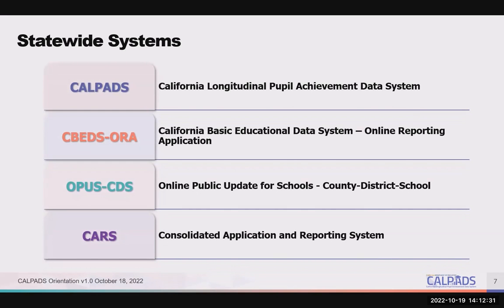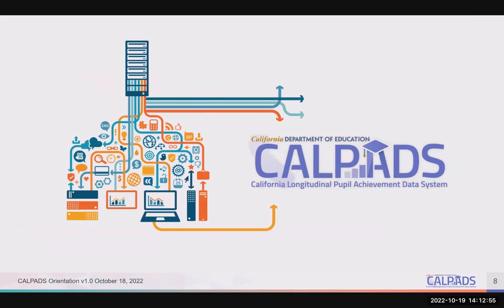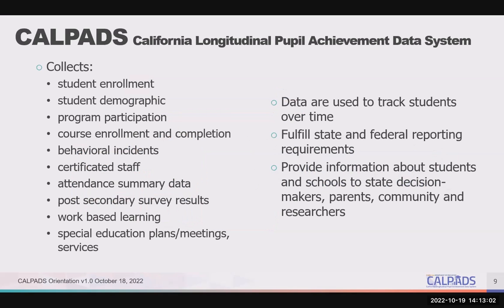The statewide systems are CALPADS, the California Longitudinal Pupil Achievement Data System; CBEDS Aura, the California Basic Educational Data System Online Reporting Application; OPUS CDS, the Online Public Update for Schools, County District Schools; and CARS, the Consolidated Application and Reporting System. CALPADS is the foundation of California's educational data systems. CALPADS data are used in funding calculations, accountability measures, state and federal reporting, assessments, program evaluation, the local control accountability plan evaluation rubrics, and for research purposes.